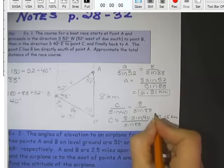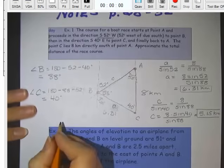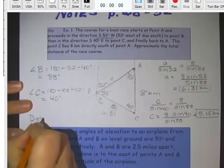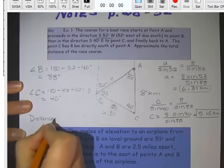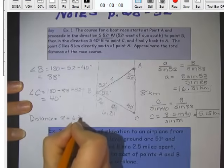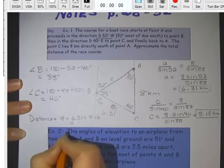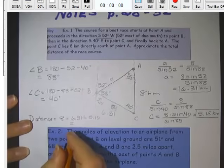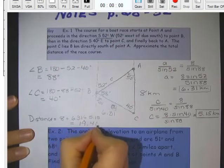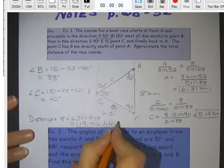So I'm looking for the total distance around the race course. The distance is going to equal the 8 kilometers plus the 6.31 plus the 5.15, which should come out to be 19.46 kilometers. There we go. All the way around the race course. Using law of sines.